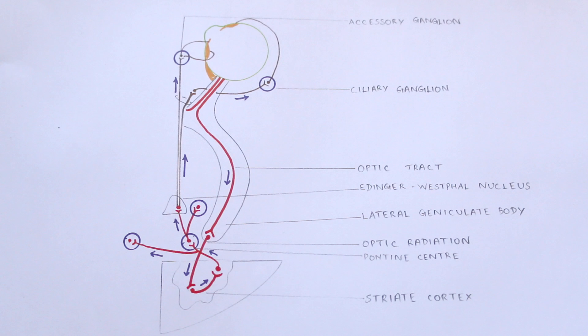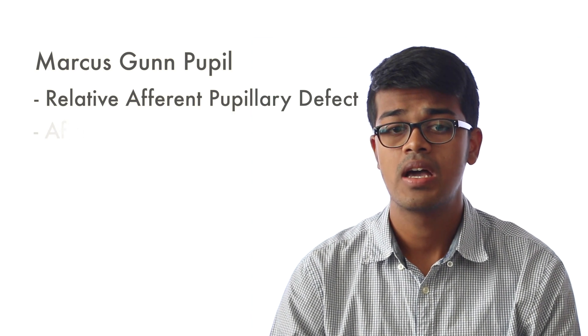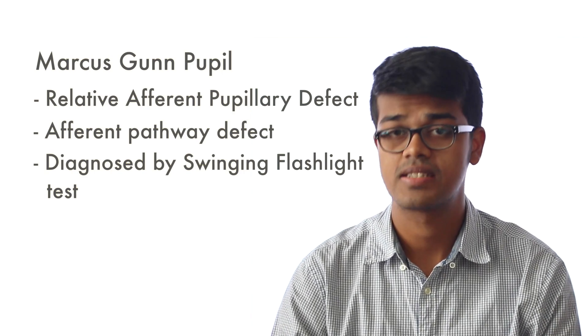We will explain the clinical significance of this fact when we talk about the anomalies of these pathways. There are three lesions of importance that we need to know and distinguish. First is the Marcus Gunn pupil, also known as the relative afferent pupillary defect. The lesion in this condition is between the retina and the optic chiasma, and the afferent impulses going away from the eye are affected. This defect can be diagnosed by the swinging flashlight test.